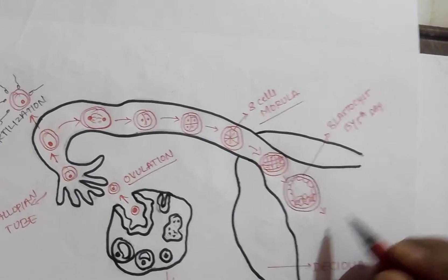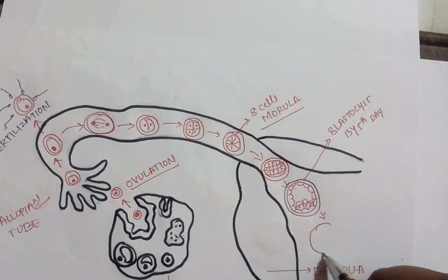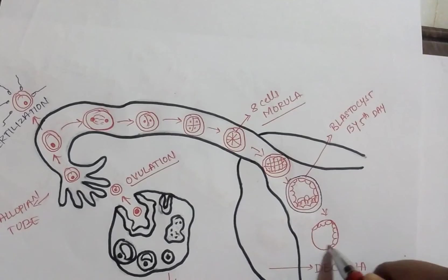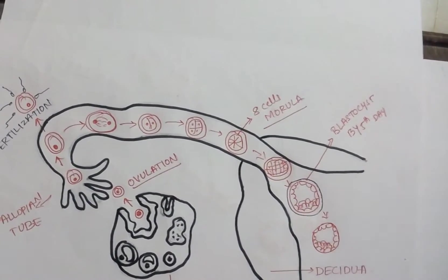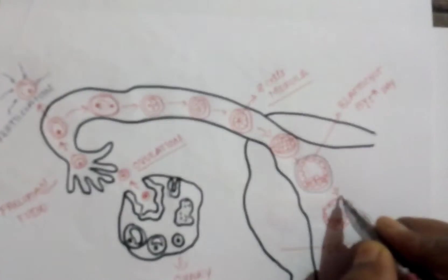After that, the covering of the blastocyst, that is zona pellucida, will get detached. It will disappear. After the fifth day, it will start to degenerate.